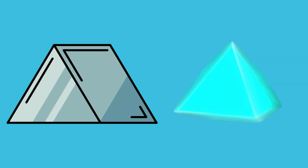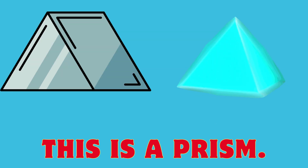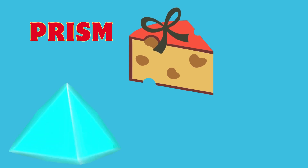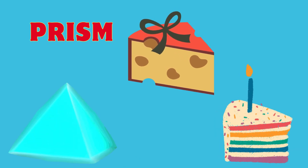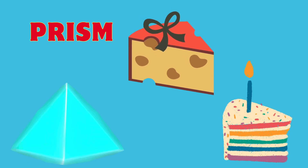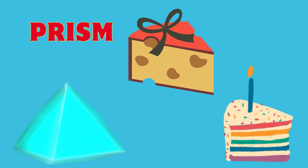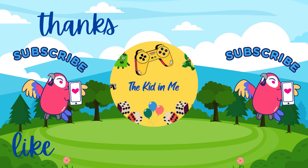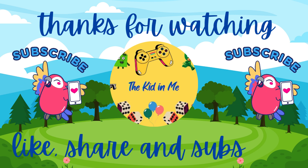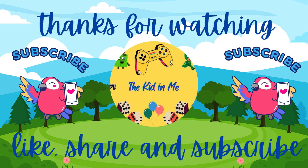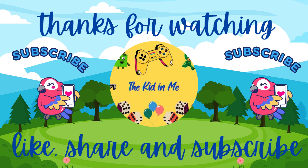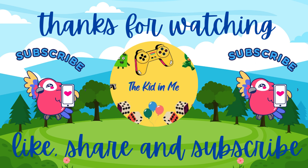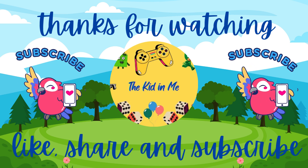What shape is it? This is a prism. This piece of cheese is prism-shaped. This piece of cake is prism-shaped. And we'll see you next time. Bye for now.